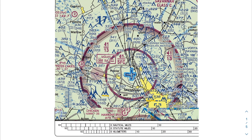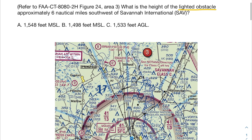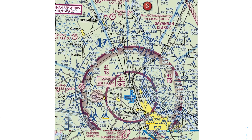This is a way to gut check that we're looking at the right obstruction. It tells us it's six nautical miles southwest, so let's jot that down: six nautical miles southwest.